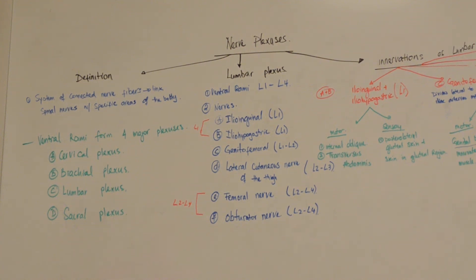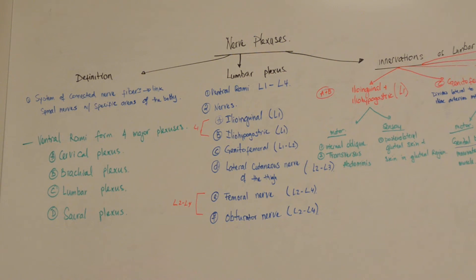Lecture 1, Part 2: Nerve Plexus. A nerve plexus is a system of connective nerve fibers that link spinal nerves with specific areas of the body. The ventral rami forms four major plexuses: the cervical plexus, the brachial plexus, the lumbar plexus, and the sacral plexus.